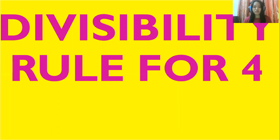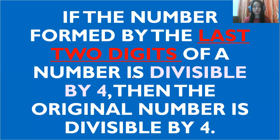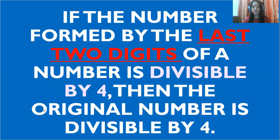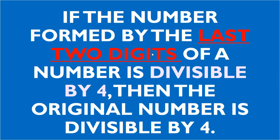First, Divisibility Rule 4. This is the rule: if the number formed by the last two digits of a number is divisible by 4, then the original number is divisible by 4. Always remember the last two digits.